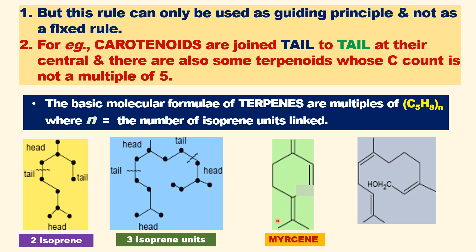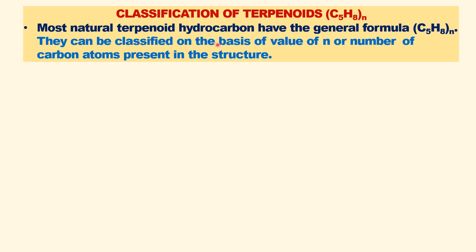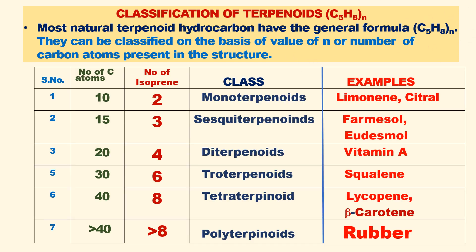For example, one terpenoid consists of two isoprene units linked in head-to-tail fashion. Another example consists of three isoprene units. The general formula of terpenoids is C5H8 times n, where n is the number of isoprene units. Based on the number of isoprene units, terpenoids are classified into groups.